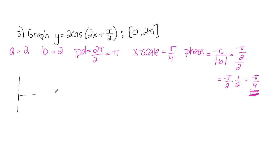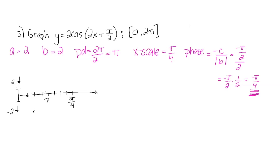Let's graph the parent function first. The amplitude is two, so I go to positive two and negative two on the y-axis. X-scale is pi over four, so I label: pi over four, two pi over four, three pi over four, pi, five pi over four, six pi over four, seven pi over four, two pi. This is a cosine curve, so it starts at the maximum and oscillates: two, zero, negative two, zero, two, zero, negative two, zero, two. Connecting those gives me the graph of y equals two cosine two x — not yet accounting for the phase shift.